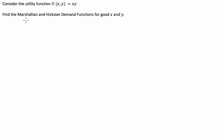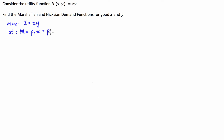The difference between Marshallian and Hicksian demand is that for Marshallian, or the uncompensated, we're trying to maximise utility. In this case it's going to be maximise U, which is equal to XY, subject to a budget constraint — our income is totally spent on good X and good Y. So the budget constraint is: price of X times the amount of X we buy, plus the price of Y times how much Y we actually buy in units. This is the Marshallian demand.